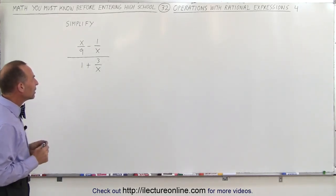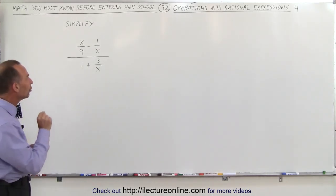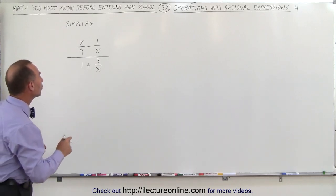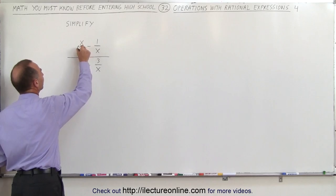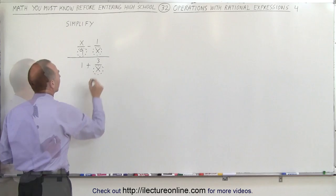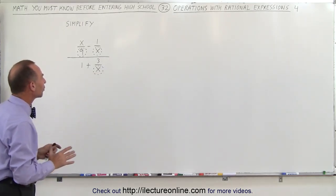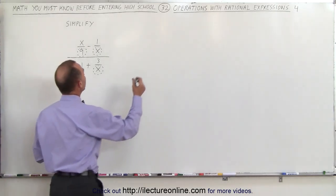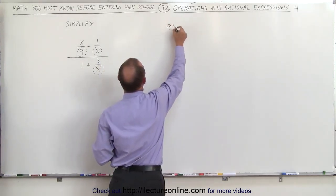The best way to do that is to look at all the denominators in the numerator and all the denominators in the denominator. So what we're going to do is we're going to circle each of the denominators. First the two in the numerator and then the one in the denominator. So what you're trying to find here is you're trying to find the lowest common factor. And in this case, that would be 9 times x.